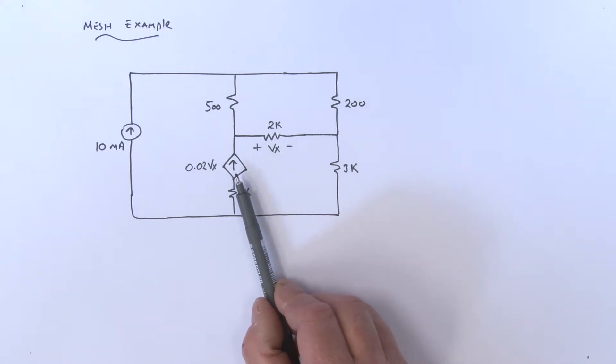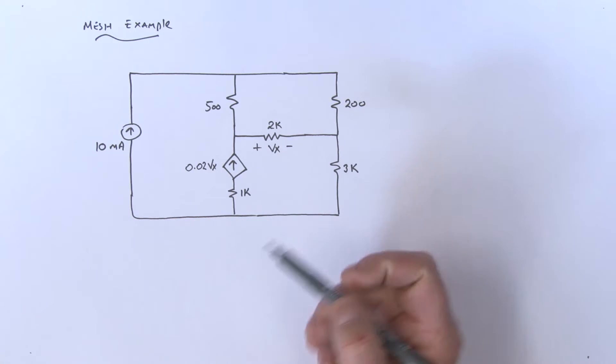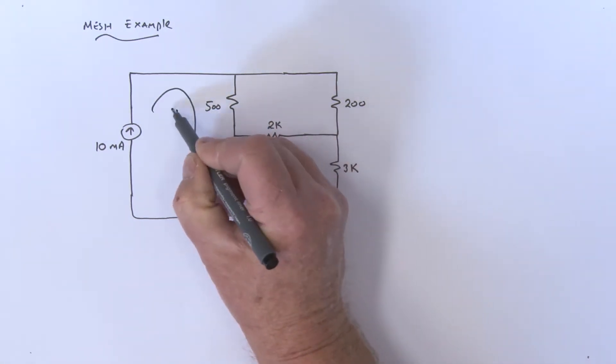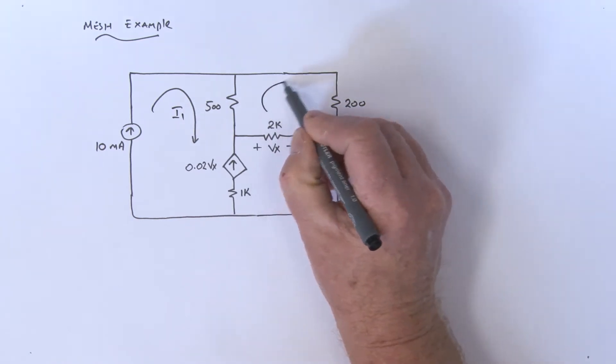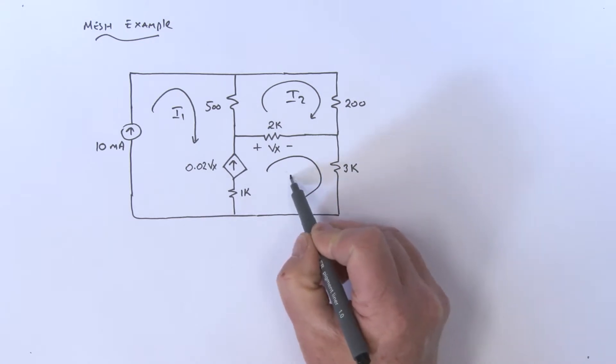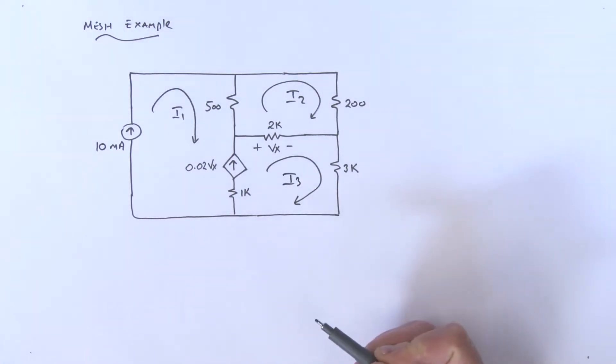How do we do this problem? Well, the first thing to do is let's draw our mesh currents. I've got my i1 mesh current, I've got my i2 mesh current, I've got my i3 mesh current.